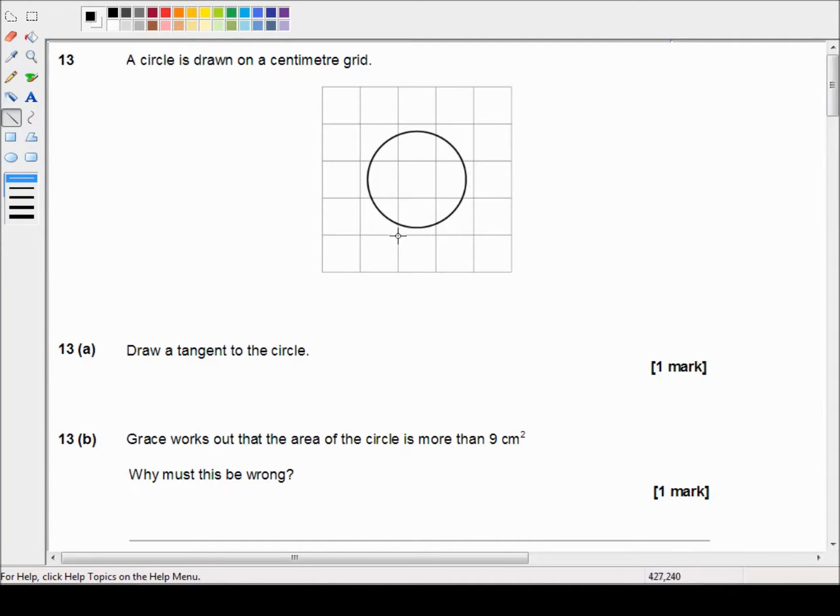A tangent is a line that just touches the circumference of the circle in one place and one place only. Do not draw your line like this, because that would be a chord, not a tangent. So it must just kiss the circle, and you can draw it anywhere, as long as it just touches the circle in one place and one place only.